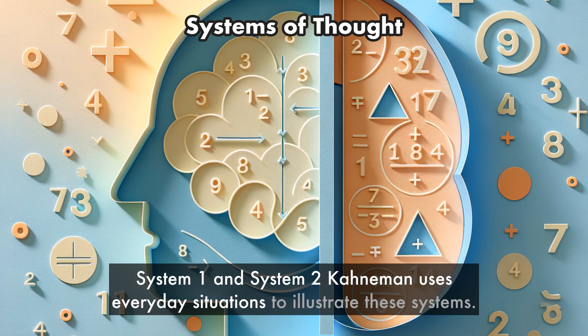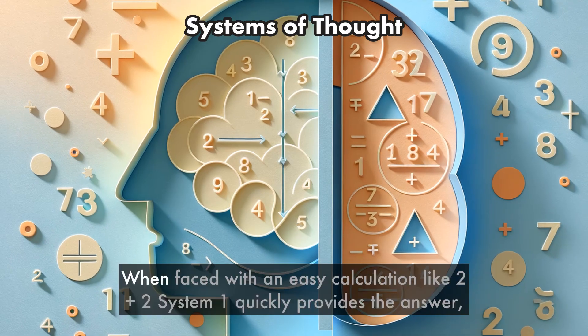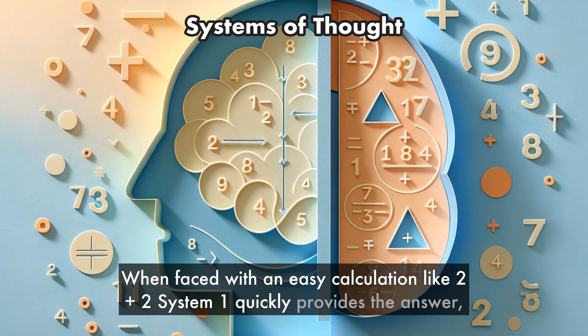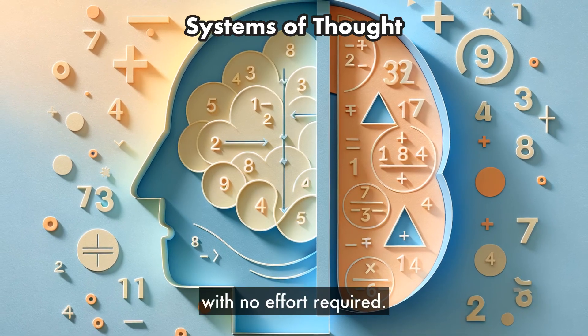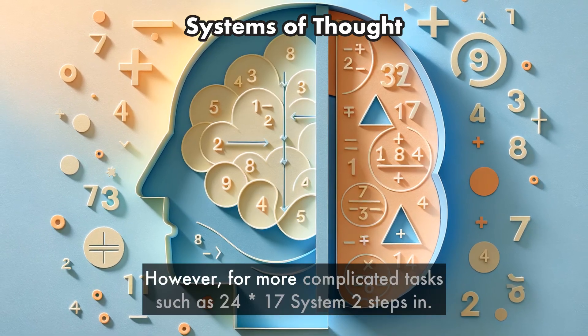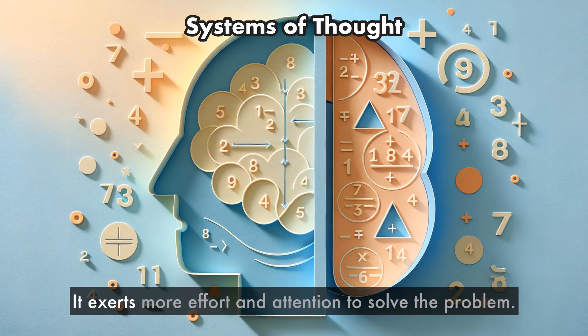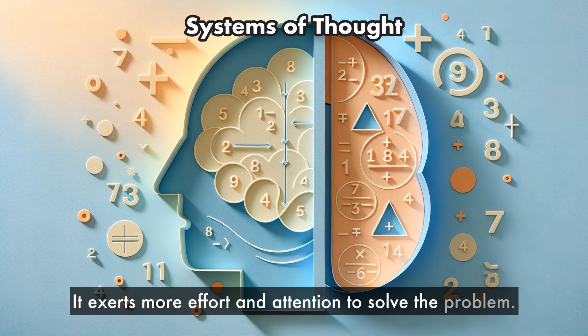Kahneman uses everyday situations to illustrate these systems. When faced with an easy calculation like 2 plus 2, system 1 quickly provides the answer with no effort required. However, for more complicated tasks such as 24 to 17, system 2 steps in. It exerts more effort and attention to solve the problem.